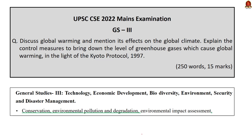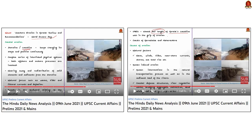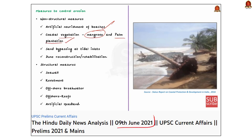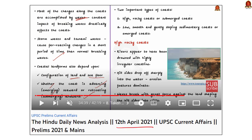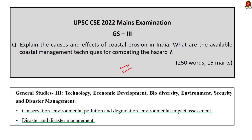Question number 18 in GS Paper 3: 'Explain the causes and effects of coastal erosion in India. What are the available coastal management techniques for combating the hazard?' We covered what is coastal erosion, its causes, and mitigation strategies in our 9th June 2021 Hindu News Analysis. We covered the effects of coastal erosion in our 12th April 2021 Hindu News Analysis. Using these videos, you can write a very good answer for this question.